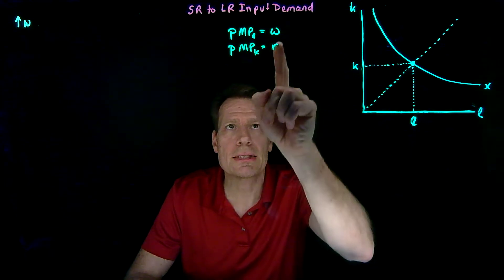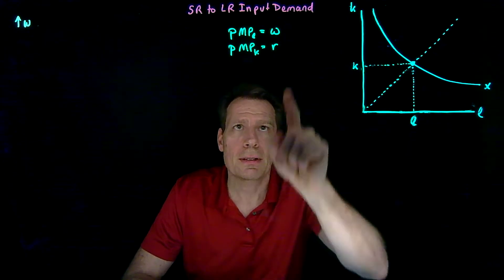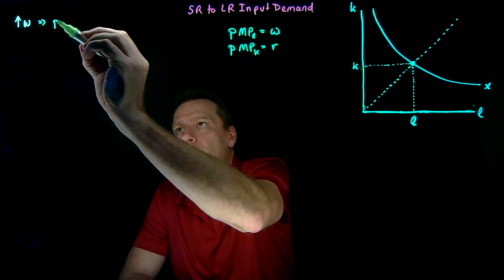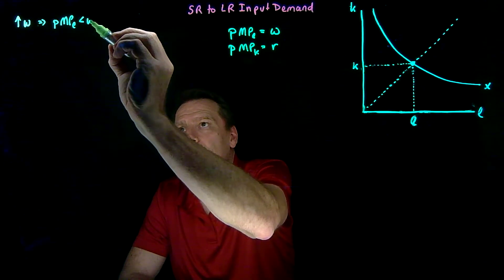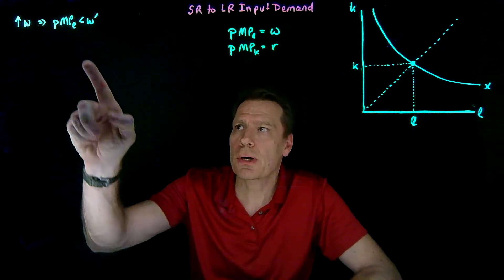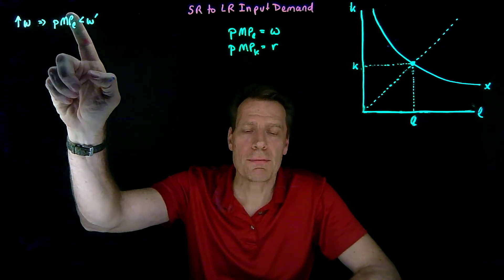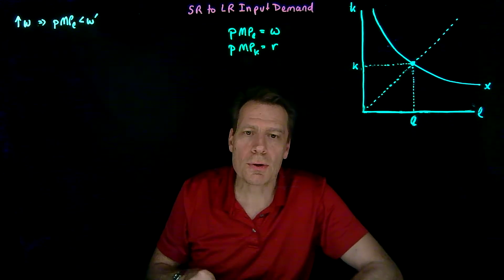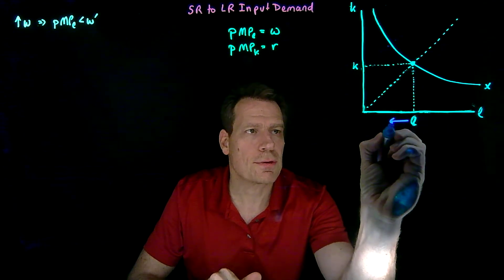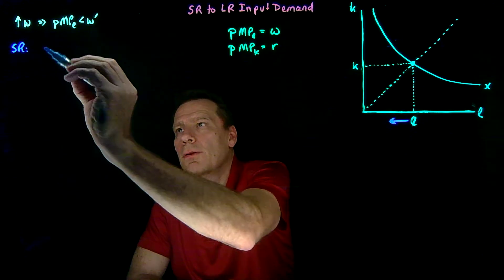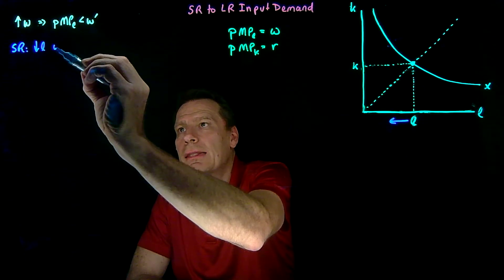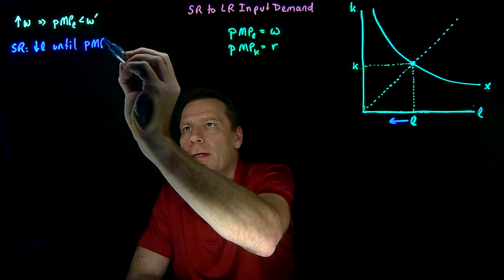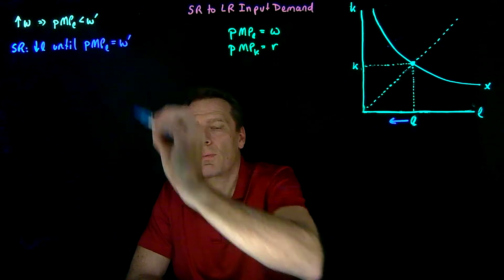When the wage increases, this first equation will no longer hold — this side goes up and this side is unchanged. So an increase in the wage will cause the marginal revenue product of labor to be less than that new higher wage. The last worker hired did not raise total revenue sufficiently to justify their cost. So the firm is going to want to let some workers go — move to the left in this picture. In the short run, the firm will reduce labor until the equation is back in balance: price times marginal product of labor once again equals that higher wage.